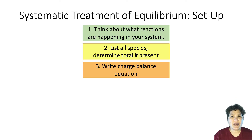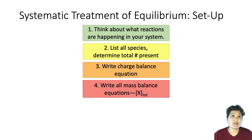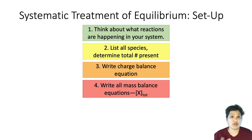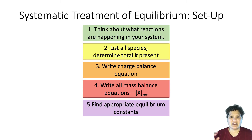Then you're going to write a bunch of equations. The first is what we call a charge balance equation — I'll go through all of these in detail shortly. The next type, and you may write more than one, is a mass balance equation. And the last type of equations you'll write down are any equilibrium constants that apply to this system.